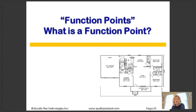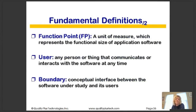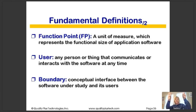So what's a function point? It's a unit of measure which represents the functional size of application software. We take things into consideration from a user perspective. A user is any person or thing that communicates or interacts with the software at any time — the same context as in object-oriented programming. Anything that sits around the boundary of my application that either sends data in or receives data from my application software.